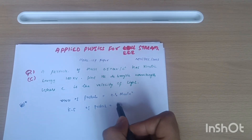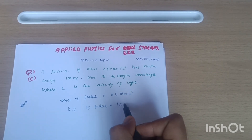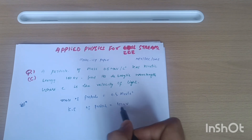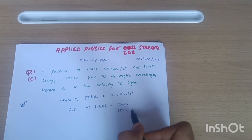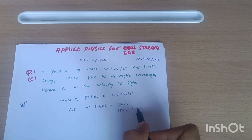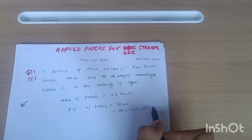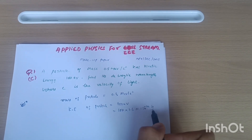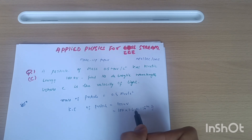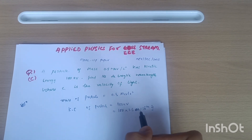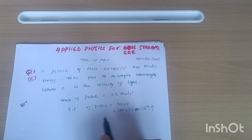To convert 100 electron volt into joules: 1 electron volt equals 1.602 × 10⁻¹⁹ joules. So to convert electron volts into joules, you multiply by the constant 1.6 × 10⁻¹⁹ joules.